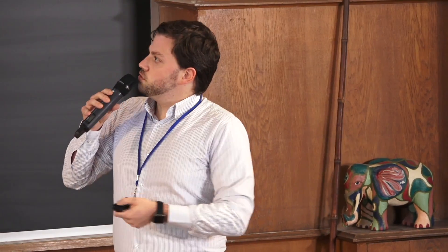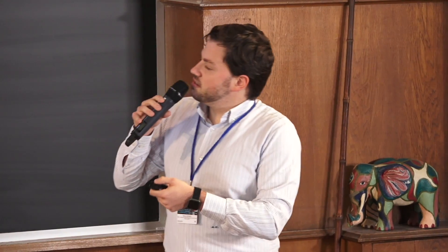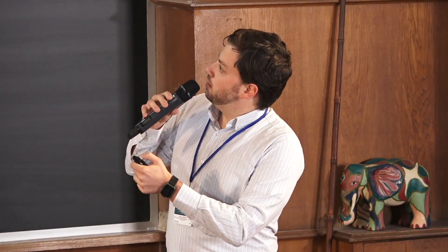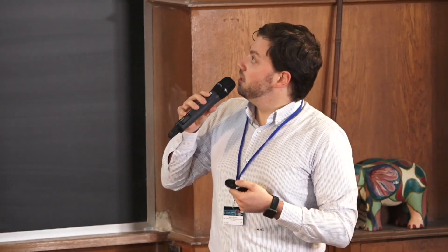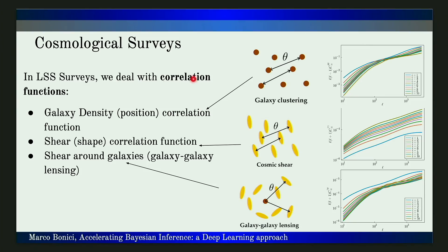Just a quick recap: usually in large-scale structure surveys we deal with correlation functions. Here, these are the correlation functions I'm interested in — lensing-lensing and galaxy angular autocorrelation functions and their cross-correlations.